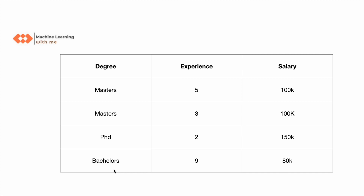In the degree column there are three distinct categories: Masters, PhD, and Bachelors. Experience has different numeric values, and salary — which is our target variable — has values like 150K.